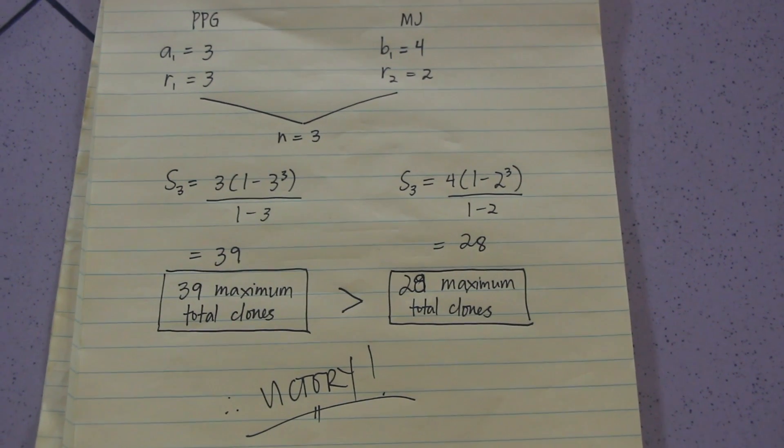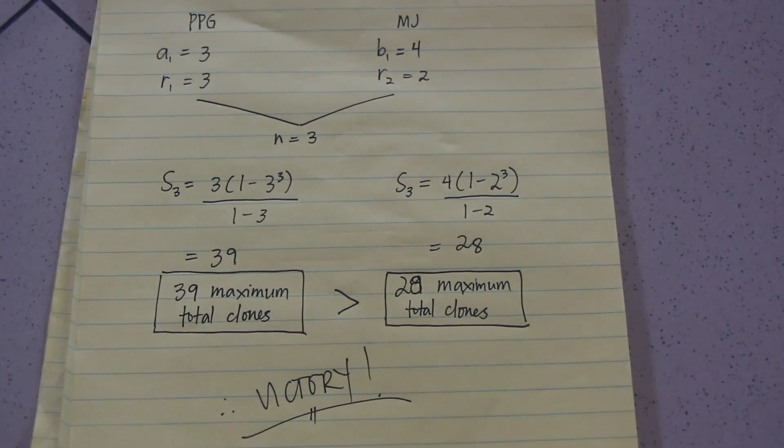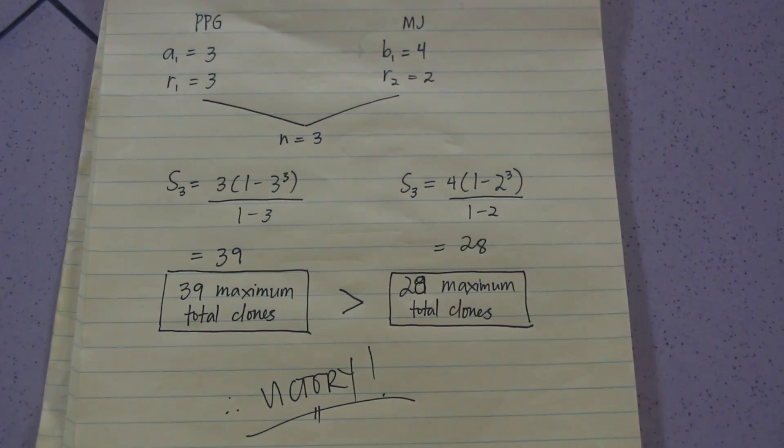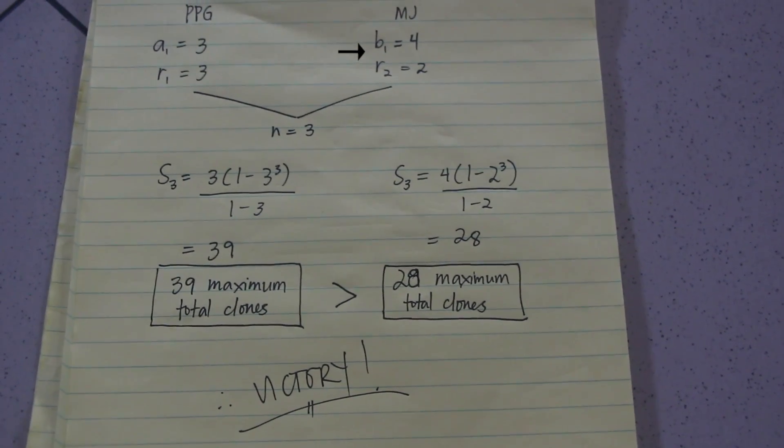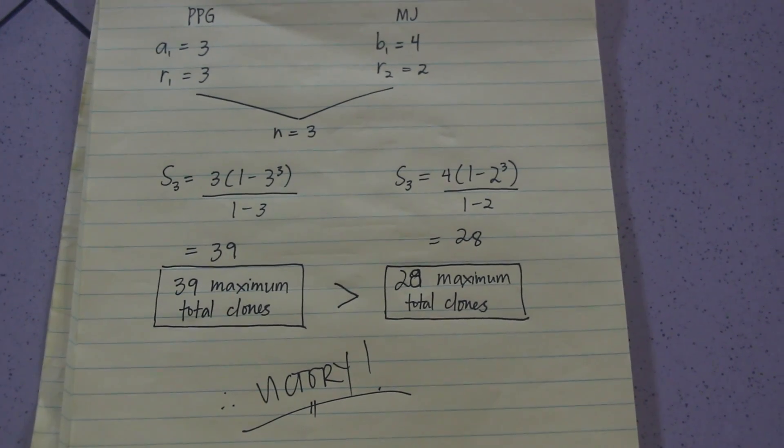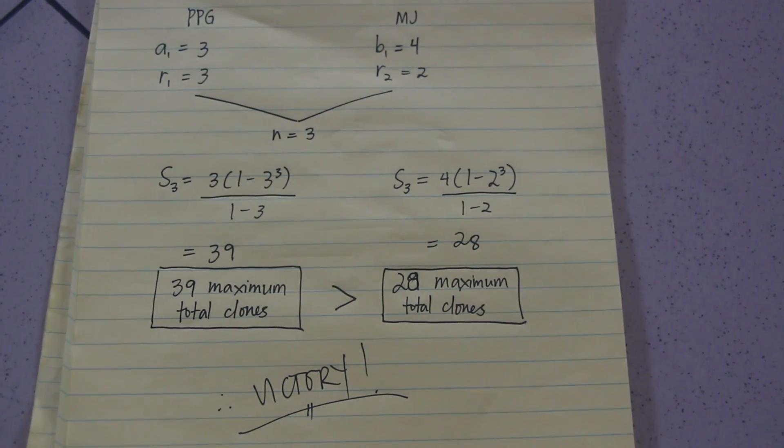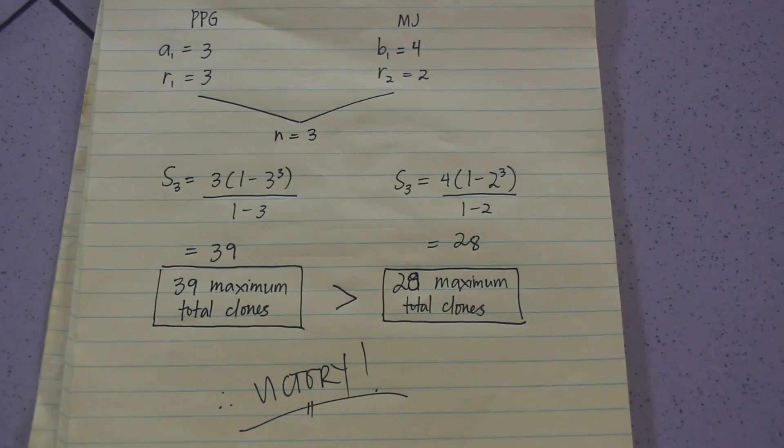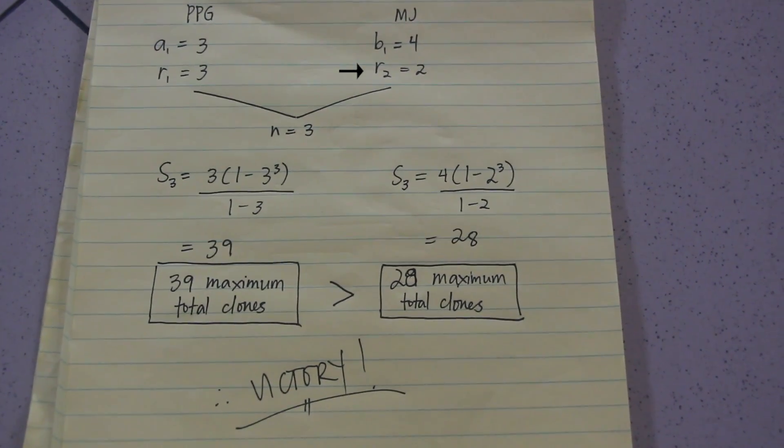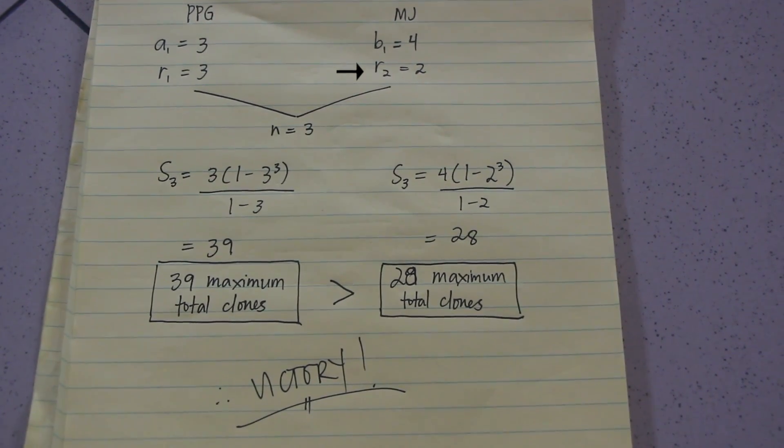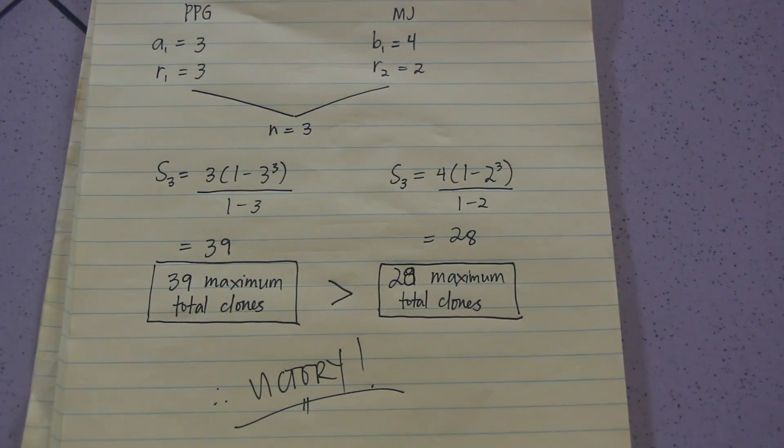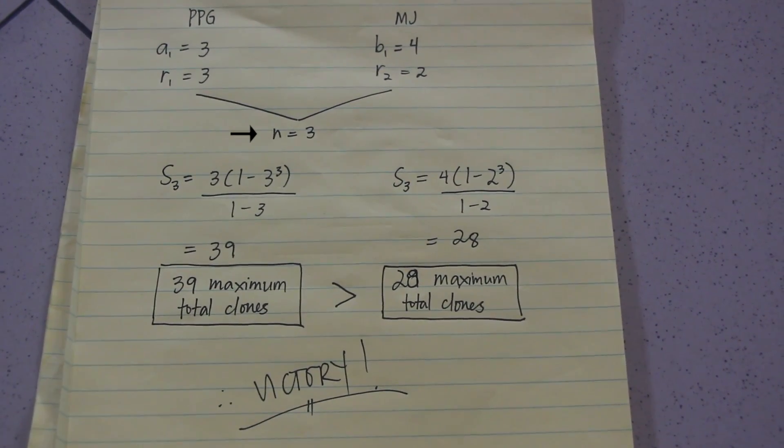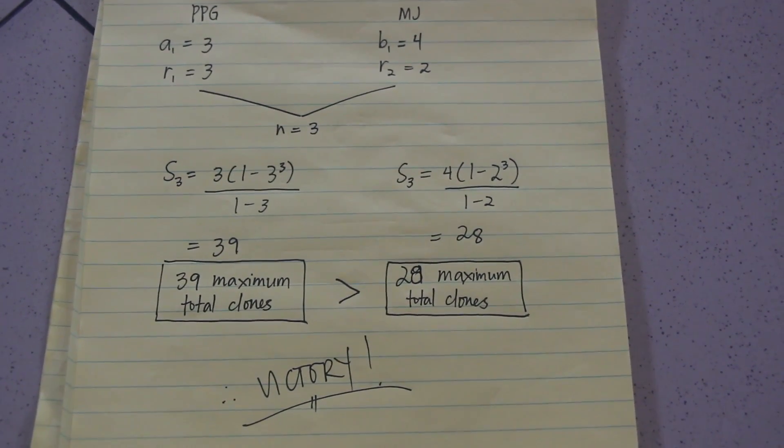On the other side, we can let B sub 1 be the first term of Mojo Jojo side. That is, the initial number of clones. In this case, B sub 1 is 4. Next, we let R sub 2 be the common ratio of Mojo Jojo side. That is, the rate of their cloning power. In this case, R sub 2 is 2. N or the first N terms is common to both sides, which is 3. This is depicted as the number of times we can clone at maximum.